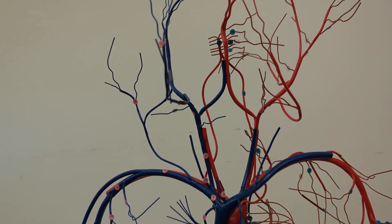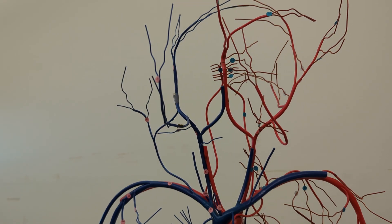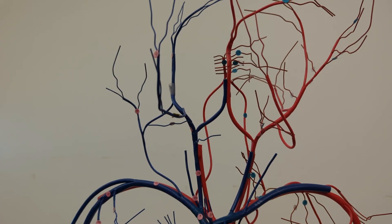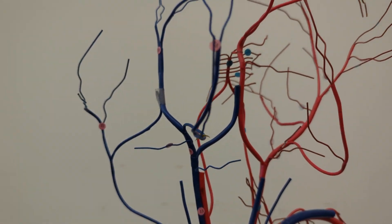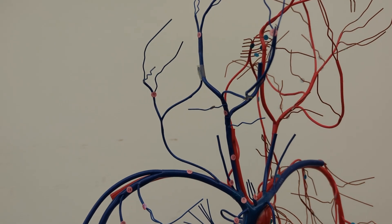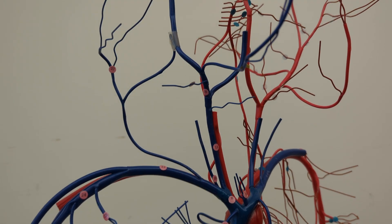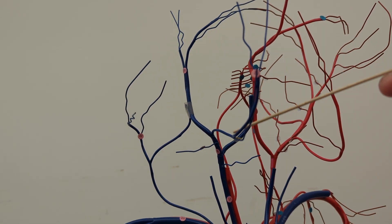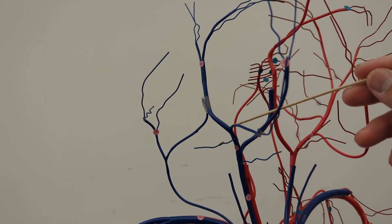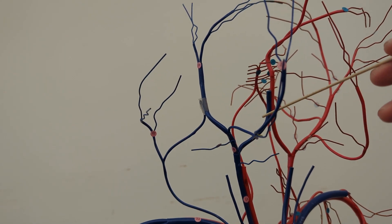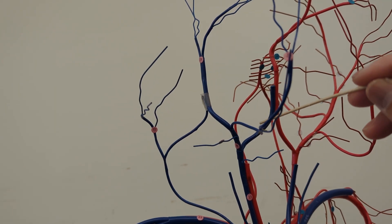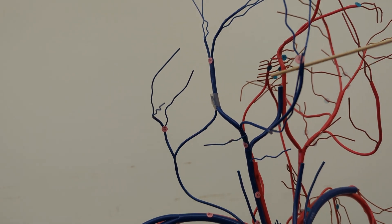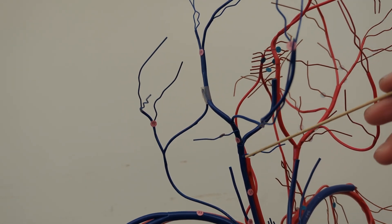Both the facial artery and superficial temporal artery branch off of the external carotid artery, but as we'll see in the veins, it'll be a little bit different. Looking at the veins, similar to the facial artery, you have a facial vein, and the facial vein is going to drain into this big vein right here. This vein is actually a continuation of the one coming from the brain — this is the internal jugular vein. So the facial vein drains into the internal jugular vein.